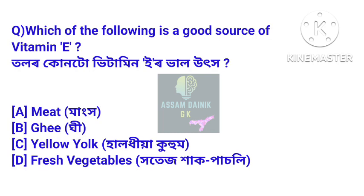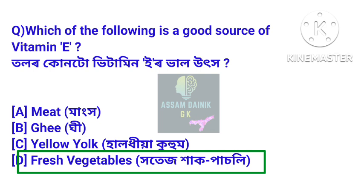Which of the following is a good source of Vitamin E? Tollar kuntum vitamin E r val utkha. Answer: fresh vegetables. Vitamin E r eta val utkha.